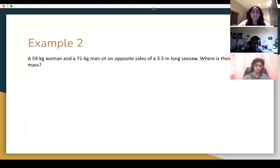And now our next problem is going to be center of mass, and this is a really basic one just to ease ourselves in. A 59 kilogram woman and a 71 kilogram man sit on opposite sides of a 3.5 meter long x-axis. Where is their center of mass? Give it a shot.